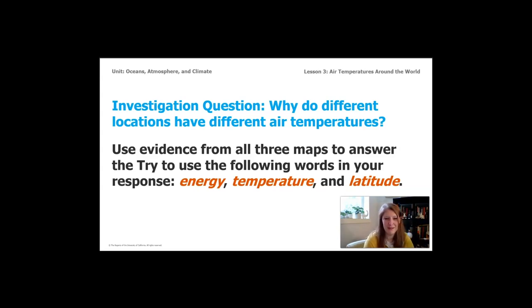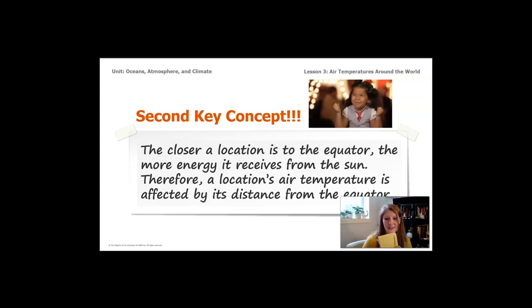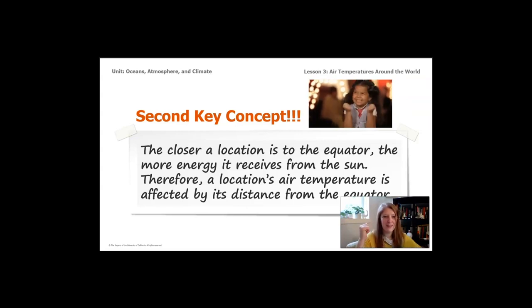The investigation question we started with today is: why do different locations have different air temperatures? Pause the video and write down an answer in your notebook, trying to use vocabulary words: energy, temperature, and latitude. If you can't write, talk to someone about your ideas. Our second key concept: the closer a location is to the equator, the more energy it receives from the sun — therefore, a location's air temperature is affected by its distance from the equator.